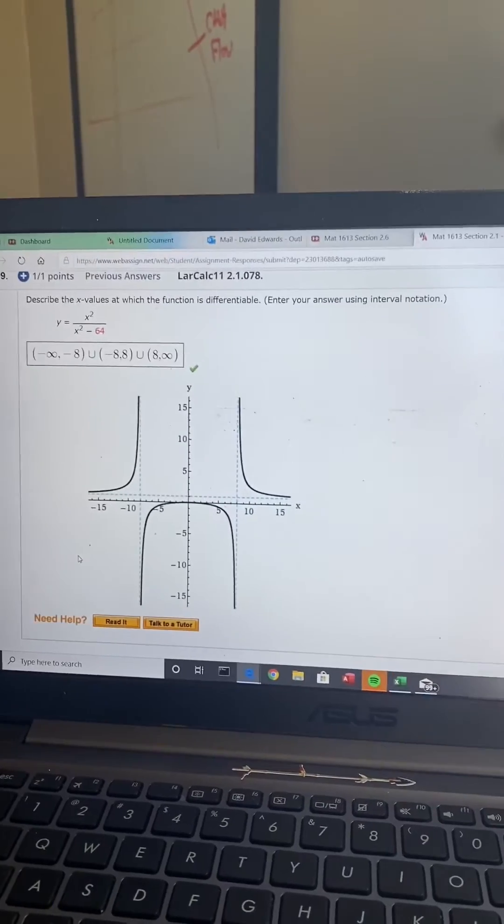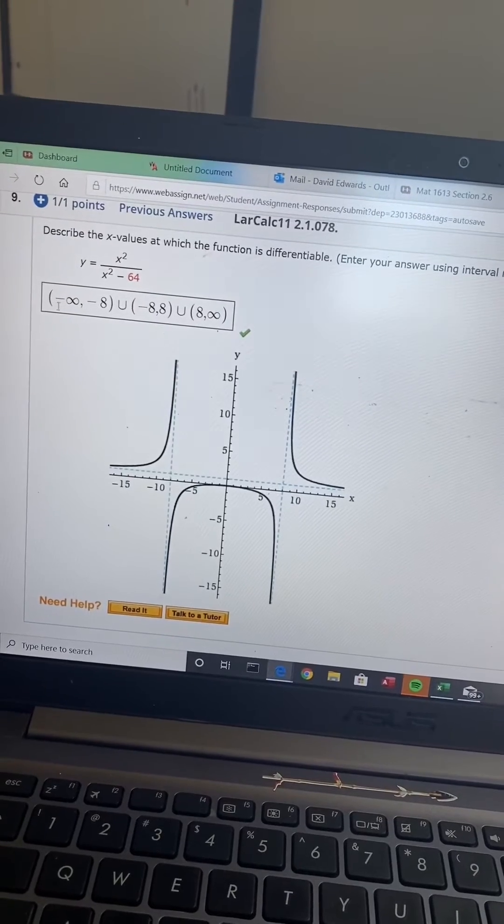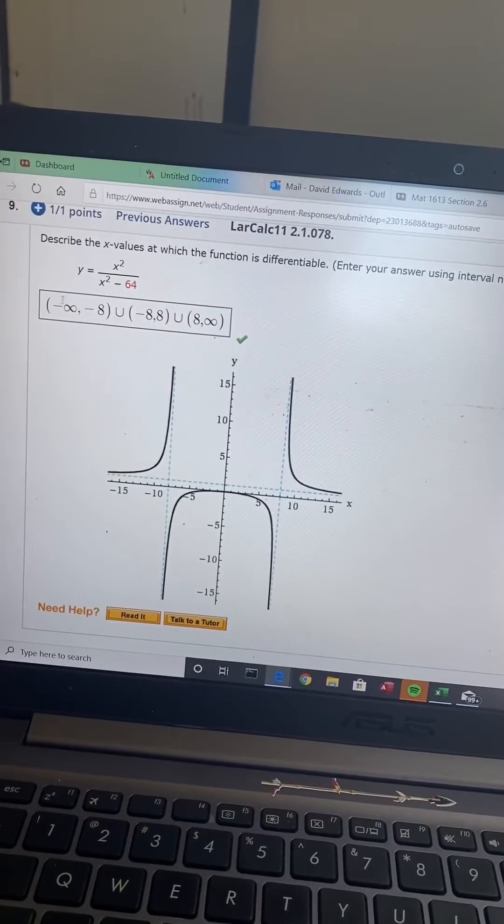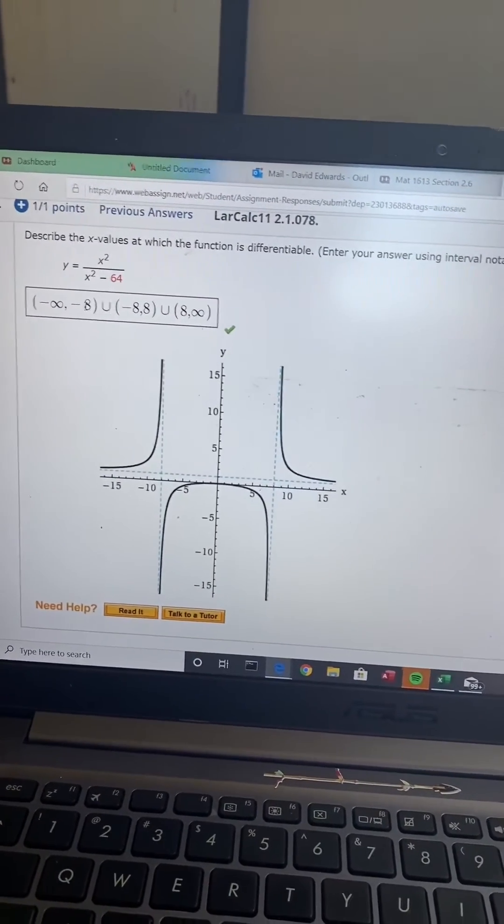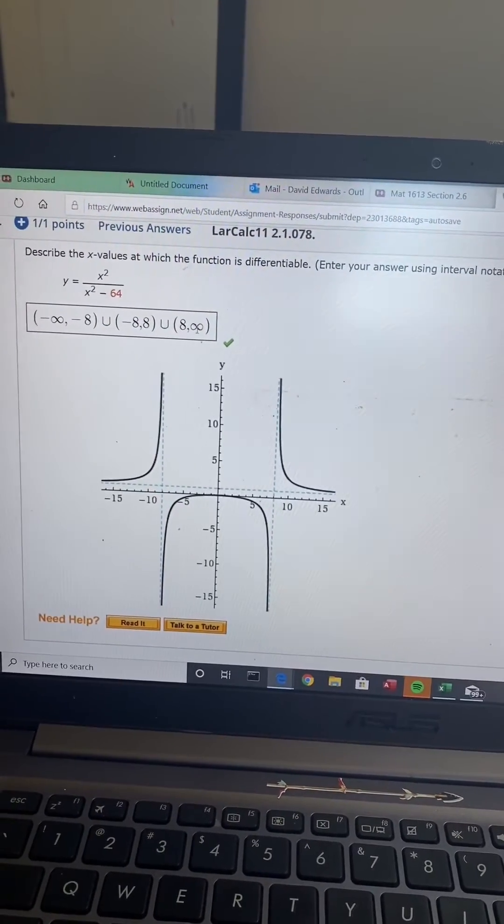So you're going to have x minus 8 and x plus 8 in your answer. How you write that in interval notation is negative infinity to negative 8. Then you're going to have your union sign, negative 8 to 8. Your union sign, 8 to infinity.